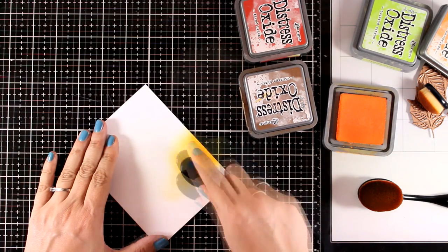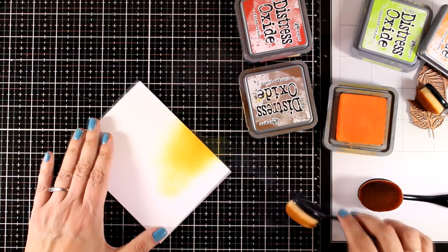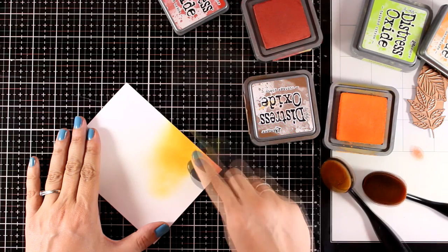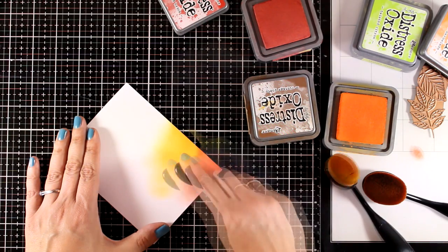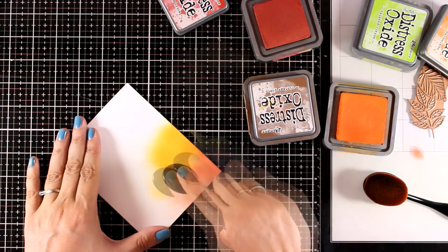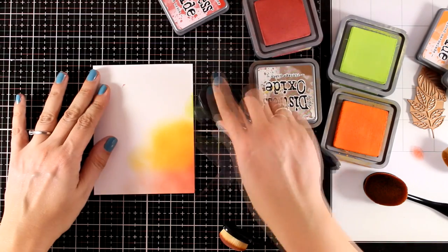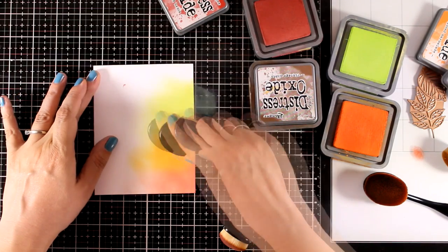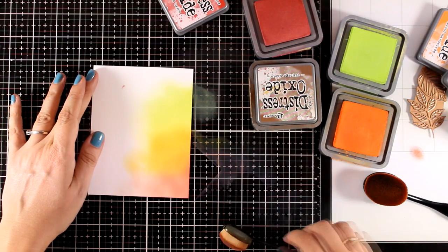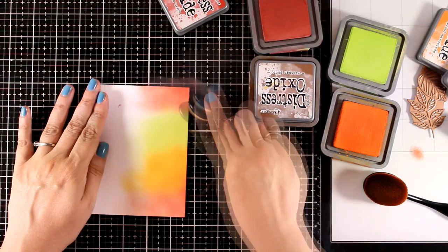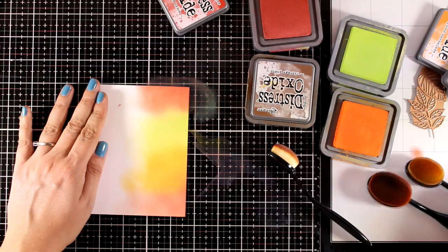I have a white panel that's 4 and a quarter by 5 and a half, and I'm going to create an inked background. For that, I'm combining different colors of distress oxide inks. My favorite color combination for fall is spiced marmalade, twisted citron, fired brick, and vintage photo. I'm using all these colors coming from one edge, and I'm not going to go all the way towards the other edge.